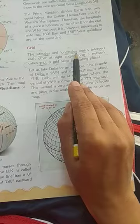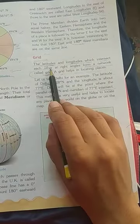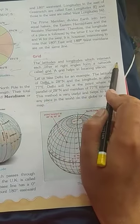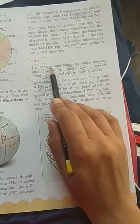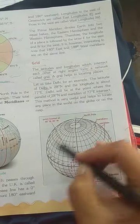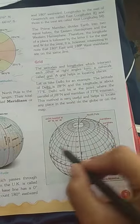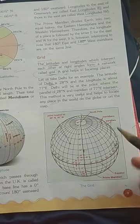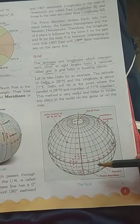The latitudes and longitudes which intersect each other at right angles form a network called grid. As we know, horizontal lines are latitudes and vertical lines are longitudes.